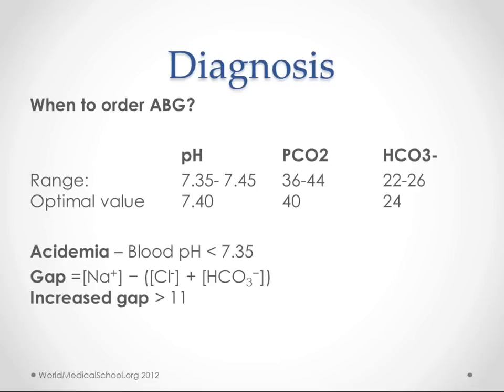Normal pH is around 7.4, normal pCO2 is about 40, and normal bicarb is about 24. We'll talk about how to use these numbers to differentiate between respiratory and metabolic acidosis, but first let's talk about some of the terms we use.